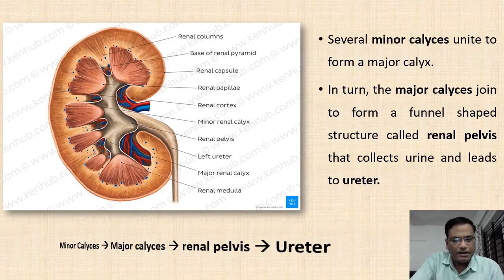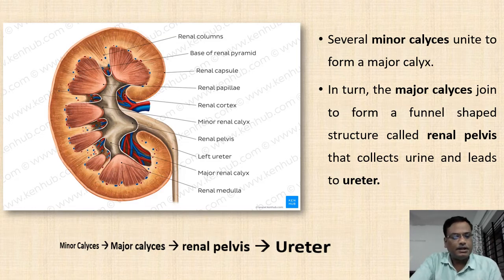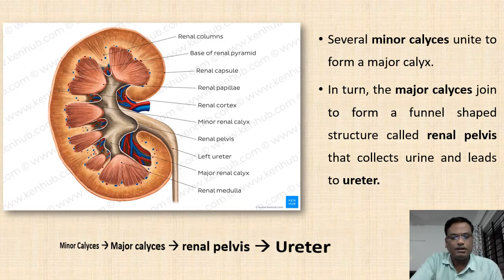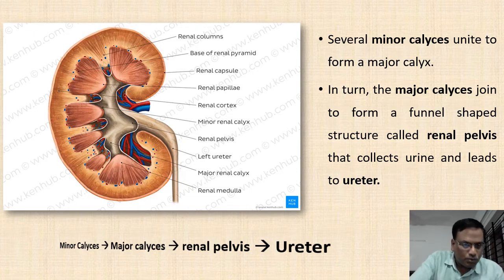The ureter enters into the urinary bladder. So the papilla, minor calyces, major calyces, renal pelvis, and ureter form the passage for the urine which is produced in the nephrons.